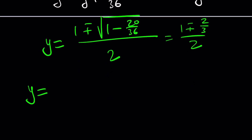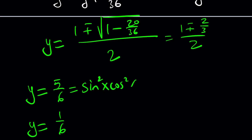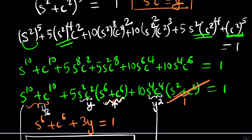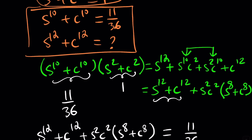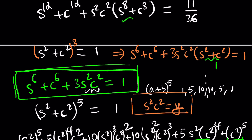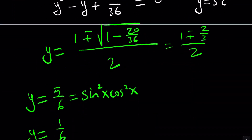From the quadratic formula, y gets two values: y equals 1 plus 2 thirds divided by 2, which is 5 over 6; or y equals 1 minus 2 thirds divided by 2, which is 1 over 6. But remember y equals sine squared x times cosine squared x. A value of 5/6 would mean sine squared times cosine squared equals 5/6, but since both are at most 1, their product can be at most 1/4. So y equals 1 over 6 is the valid solution.